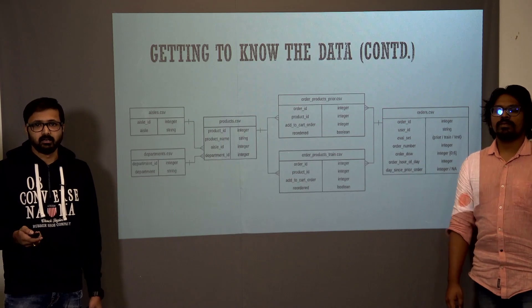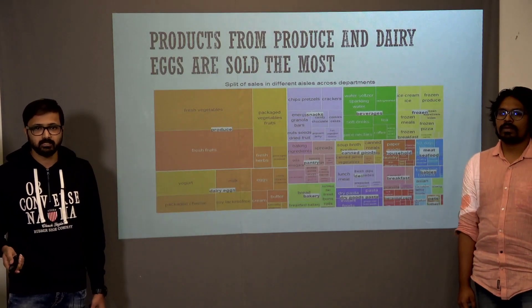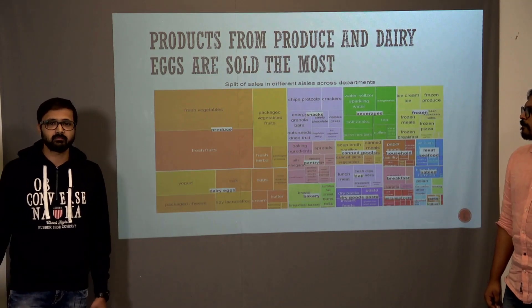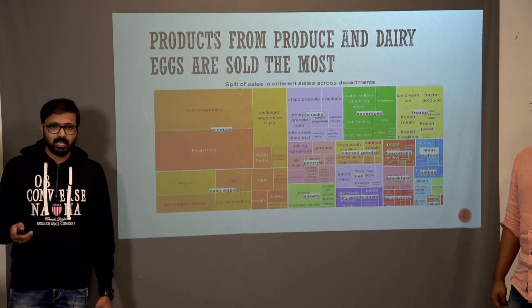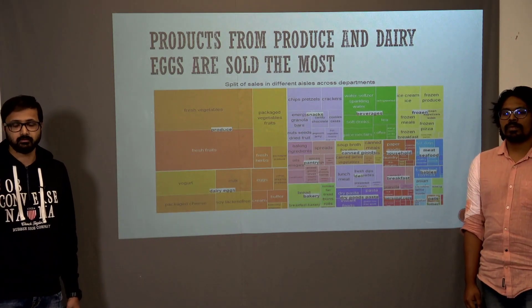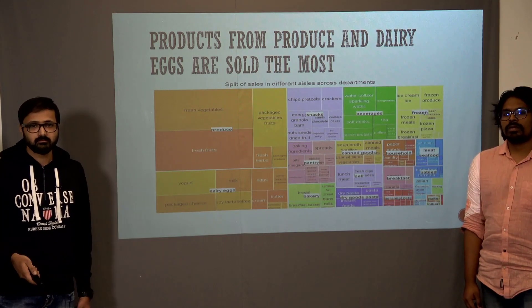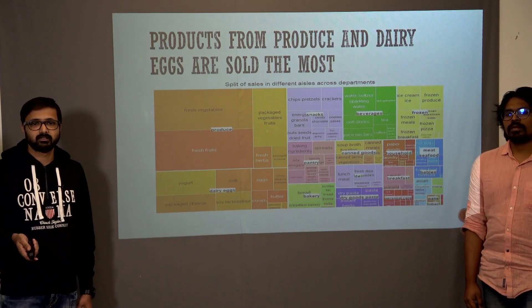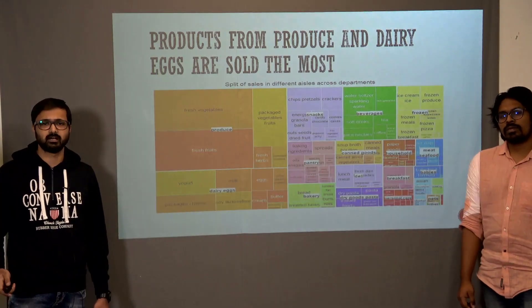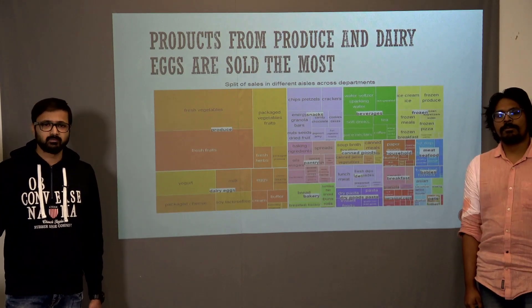Moving to the EDA — exploratory data analysis — this is the overview of the data. We have departments at a broader level, and inside each department there are different aisles. This treemap shows how many products belong to those aisles: the larger the rectangle, the more products in that department. We can see that fresh vegetables and fresh fruits make up the bulk of the data — most products sold by Instacart contained these elements — along with many other departments and products.